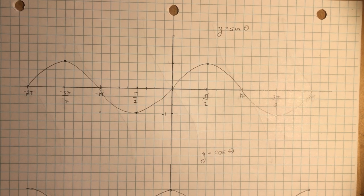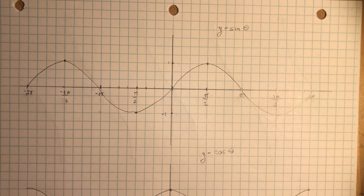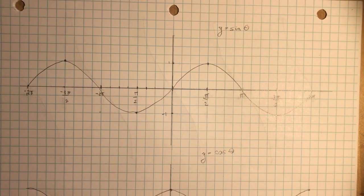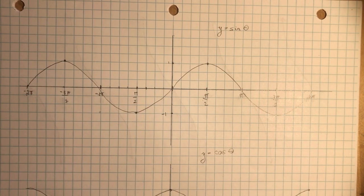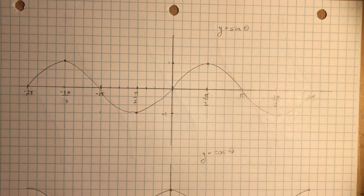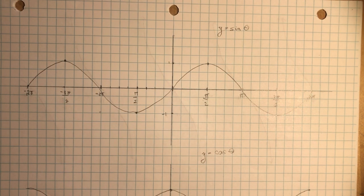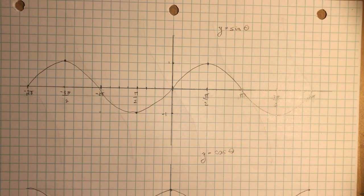Section 6.5 is exploring graphs of reciprocal trigonometric functions. We've drawn sine, cosine, and tangent graphs and we're going to look at how to find the reciprocals of these. This should be a little review because you've already covered reciprocal functions, so it's a good idea to think of all those things you learned about a reciprocal.